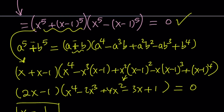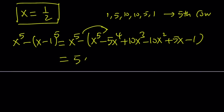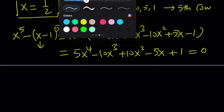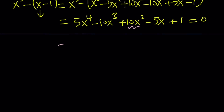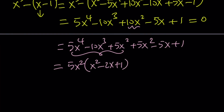Now let's look at the difference of two fifth powers. After expansion, x to the fifth cancels out and you get five x to the fourth minus ten x cubed plus ten x squared minus five x plus one equals zero. To solve this quartic, we're going to break down the ten x squared into two pieces: five x to the fourth minus ten x cubed plus five x squared, plus five x squared minus five x plus one. We can factor out five x squared from the first three terms to get x squared minus two x plus one inside — which should be familiar.